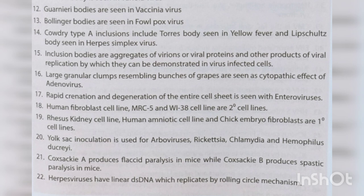Large granular clumps resembling bunches of grapes are seen as the cytopathic effect of adenovirus. Rapid cratination and degeneration of the entire cell sheet is seen with enteroviruses. Human fibroblast cell lines MRC-5 and WI-38 are secondary cell lines, while rhesus kidney, human amniotic, and chick embryo fibroblast cell lines are primary cell lines. Yolk sac inoculation is used for arboviruses, rickettsia, chlamydia and Haemophilus ducreyi.